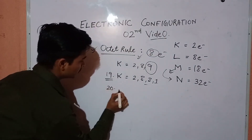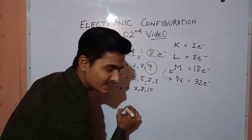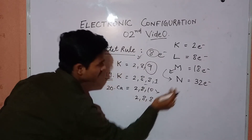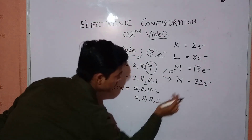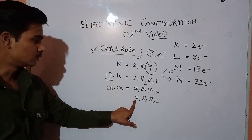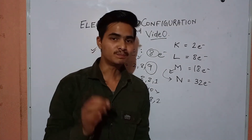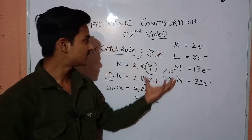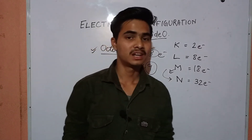Similarly, the electronic configuration of calcium: we give 8 electrons to the M shell — not 10 — because the outermost shell can only hold 8. We still have 2 electrons remaining, so those 2 go to the N shell. The electronic configuration of calcium is 2, 8, 8, 2. I hope you now understand why we cannot write the configuration of potassium and calcium the way we first thought.